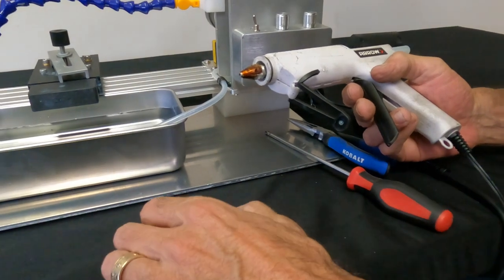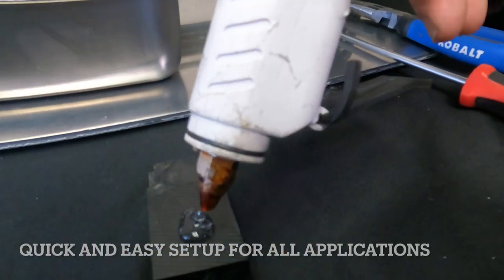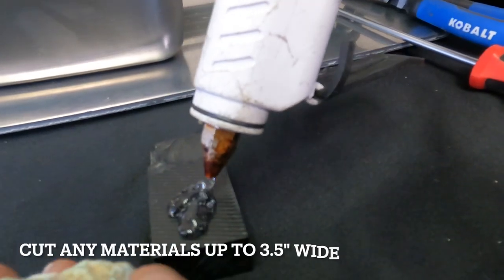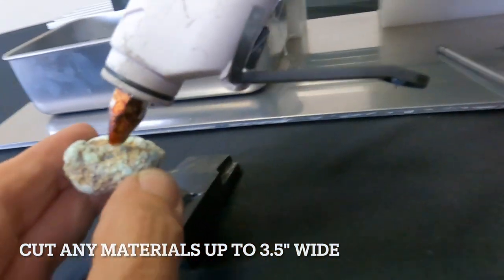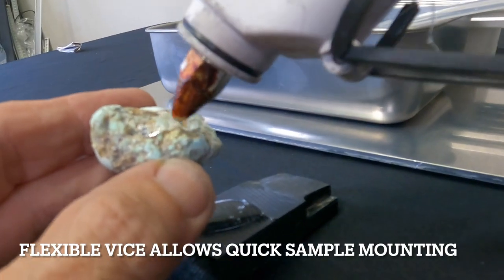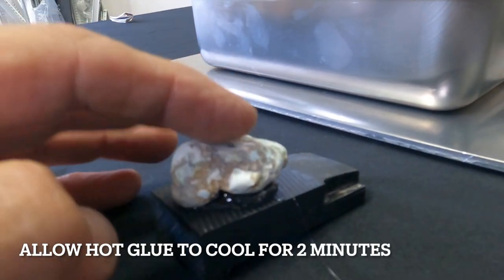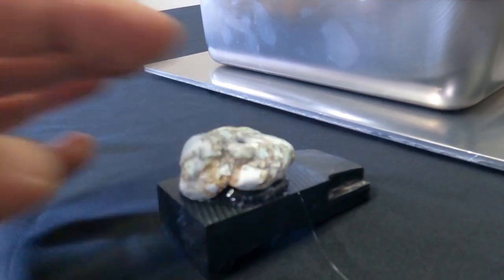Gluing the rock to the vise is very simple. Put a puddle of glue on the vise and lightly smear some glue on the rock and hold it for just a minute.